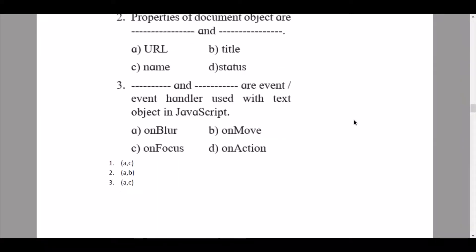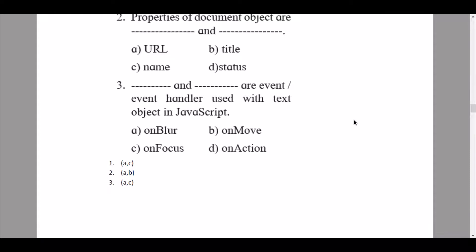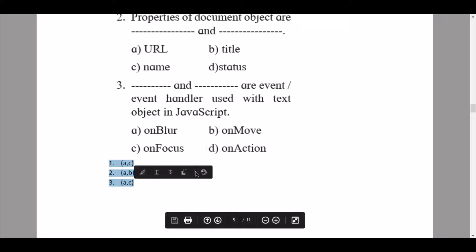Question 3: dash and dash are event handlers used with text object in JavaScript — the answers are option A onblur and option C onfocus. So onblur and onfocus are event handlers used with text object in JavaScript.